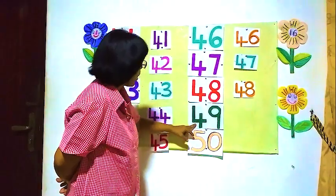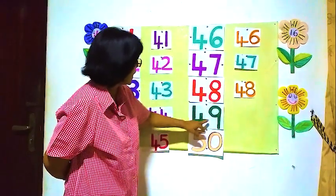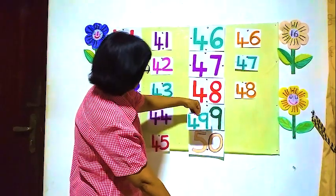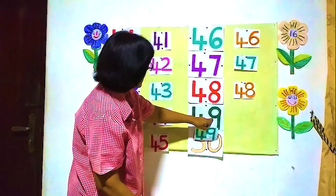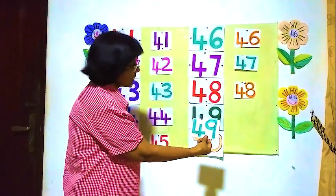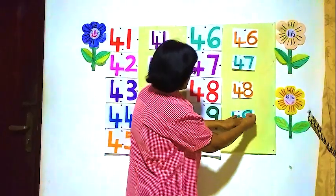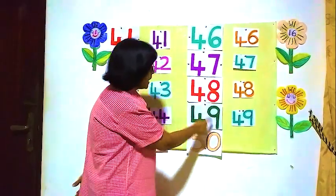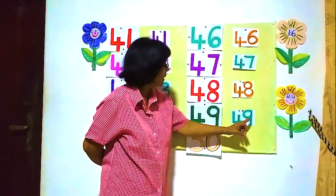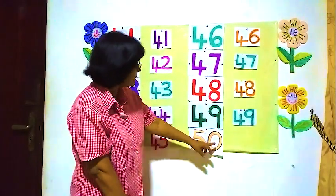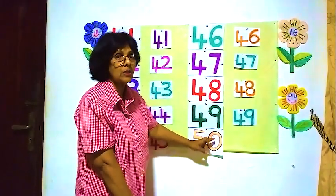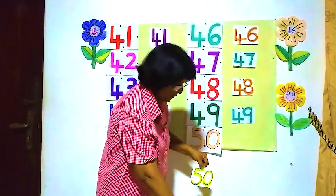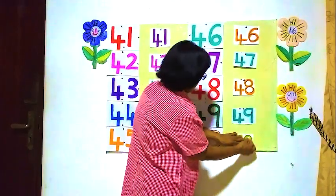Now next one: 49, 4 and 9. Is this 49? Yes — 4 and 9, 49. 4 and 9, 49. This is also 49. Here 49. 4 and 9, 49. This is the last number: 5 and 0, 5 and 0 is 50. 50 — 5 and 0. Here 5 and 0, 50.